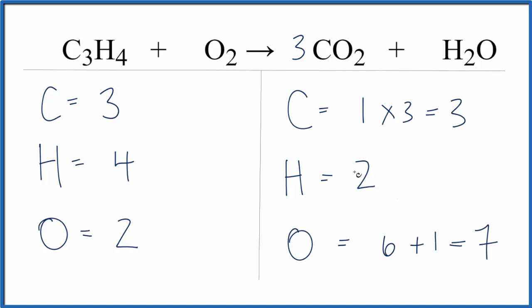We might as well go ahead and try to balance the hydrogens next. That might end up giving us an even number of oxygens, and that could help us out. So we could put a two in front of the H2O, and then we'd have two times two. That would give us four hydrogens.